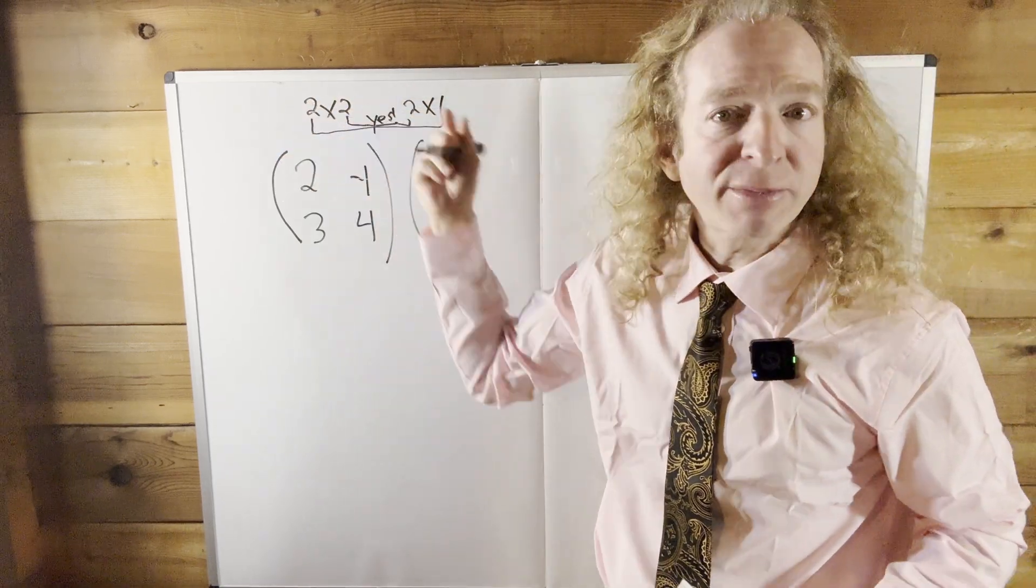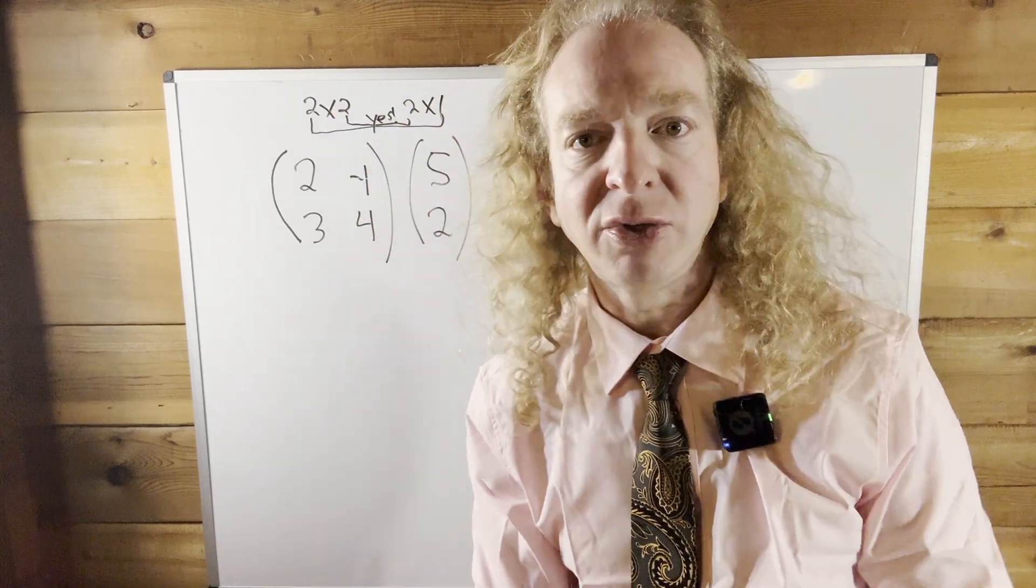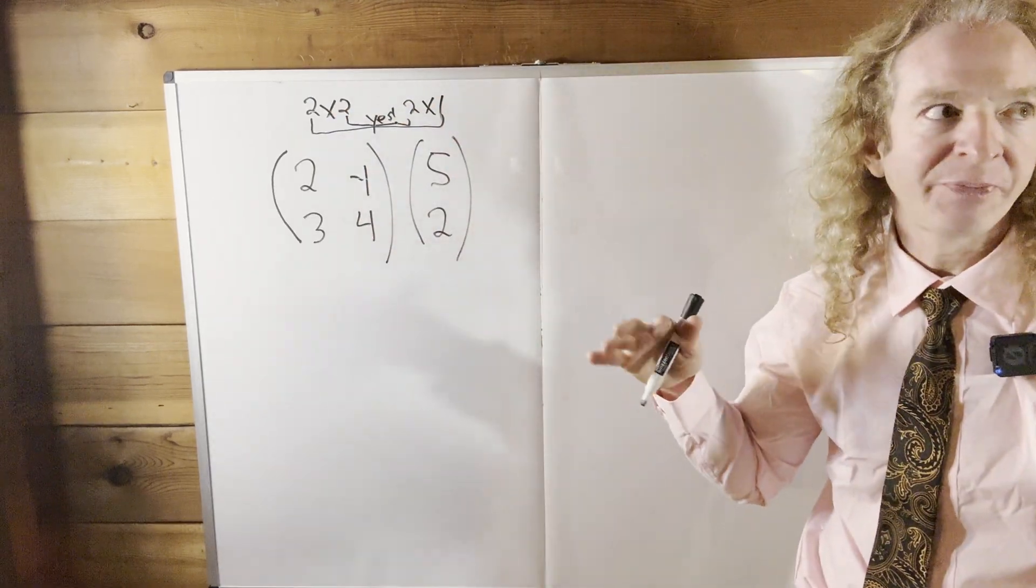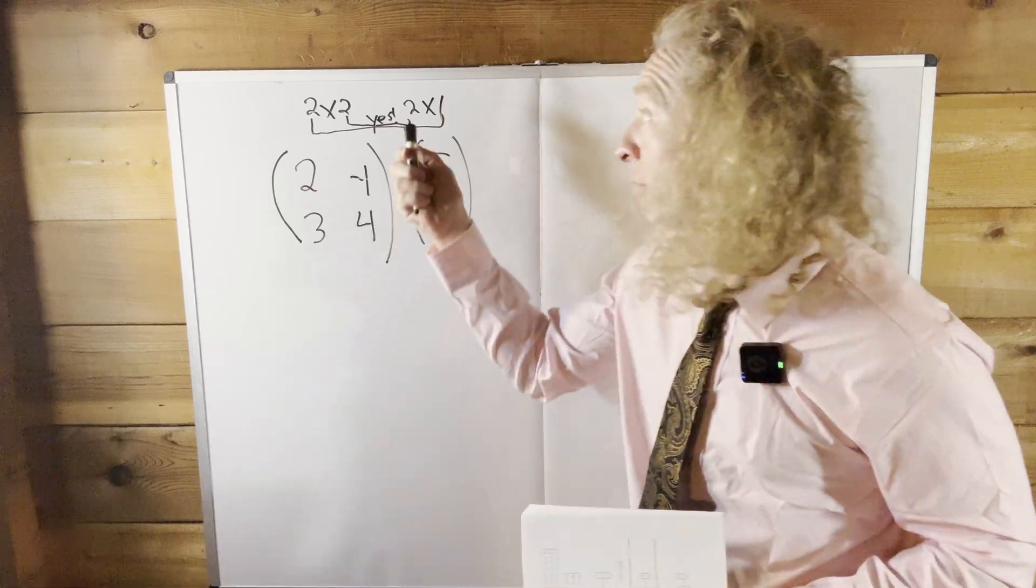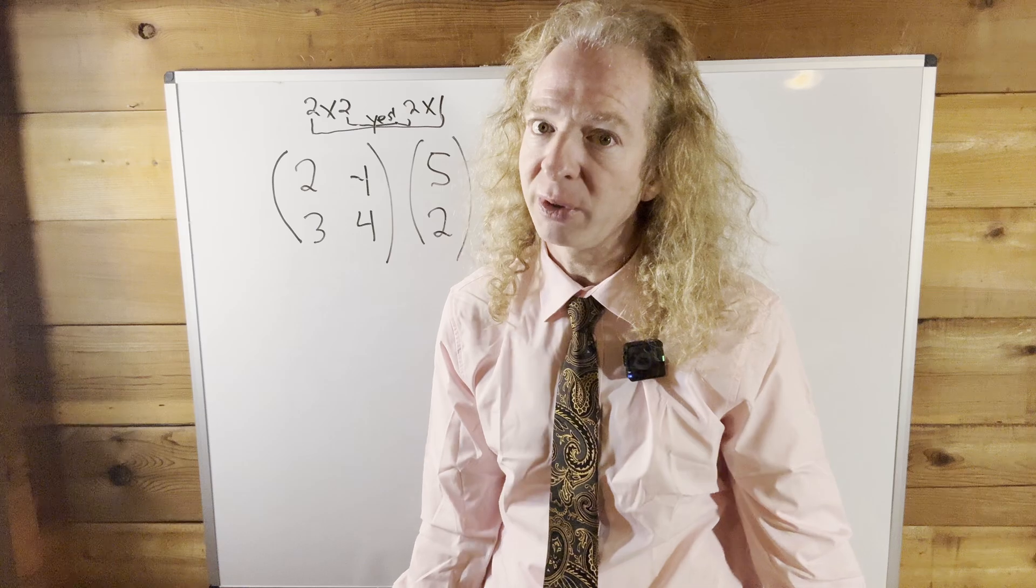If these inside numbers don't match, for example, if this was a four and this was a one, game over, right? You can't multiply. You just say, not possible, you can't do it. But because these inside numbers are the same, we can multiply, right, super important.